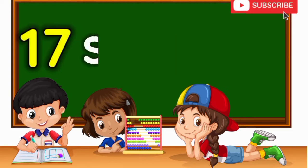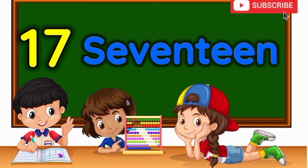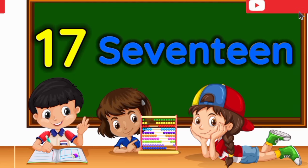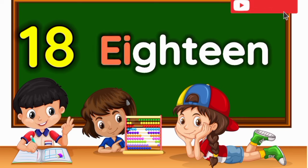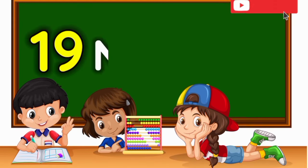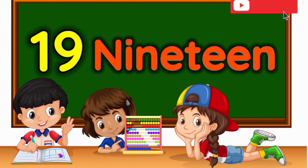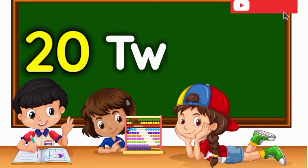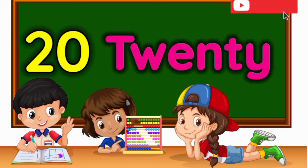Number 17 — S-E-V-E-N-T-E-E-N. Seventeen. Number 18 — E-I-G-H-T-E-E-N. Eighteen. Number 19 — N-I-N-E-T-E-E-N. Nineteen. Number 20 — T-W-E-N-T-Y. 20.